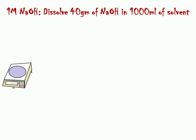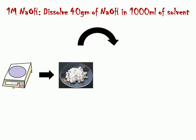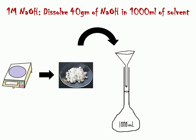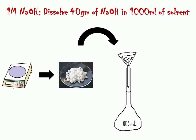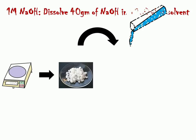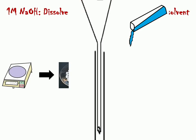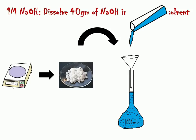First, weigh accurately 40 grams of NaOH. Then set up assembly by keeping funnel on volumetric flask. Now transfer the sodium hydroxide into funnel. Then add sufficient amount of solvent to dissolve the sodium hydroxide completely. After complete dissolution, make up volume up to the mark, up to 1000 ml, and swirl well.